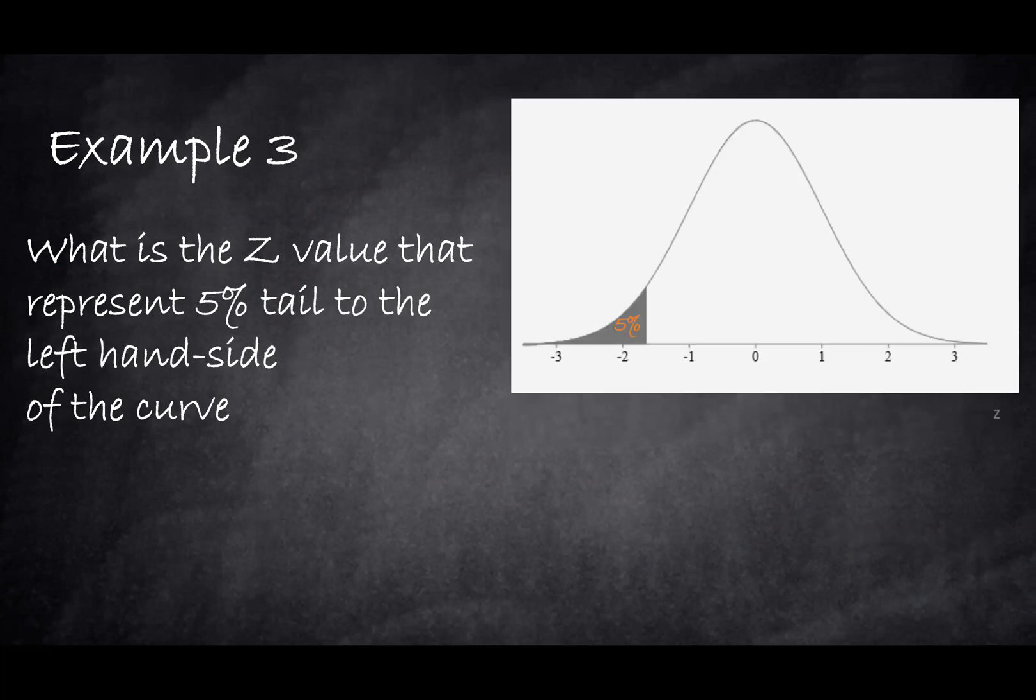Let's see another example. What is the Z value that represents 5% tail to the left-hand side of the curve? In this case we are looking at the left-hand side of the curve.